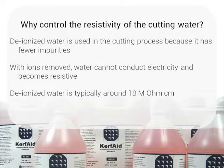Why control the resistivity of the cutting water? Water used in the wafer dicing process is typically deionized to remove the impurities found in city water. By definition, water that has been deionized has had its ions removed. Without these ions, water cannot conduct electricity and becomes highly resistive. Deionized water used in wafer dicing is typically around 18 megaohm centimeters.